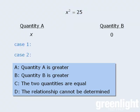Given this information, there are two possible values for X. X could equal 5, in which case quantity A is greater than quantity B. Or it could be the case that X equals negative 5, in which case quantity B is greater than quantity A.